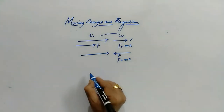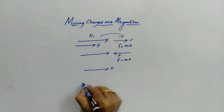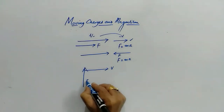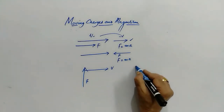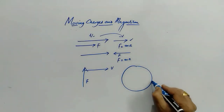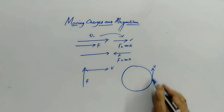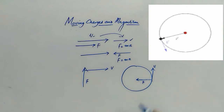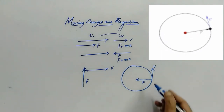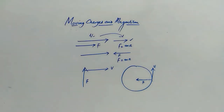Now what happens when the velocity is in one direction but the force is acting in the perpendicular direction? In this case, the velocity is in the tangential direction and the force acts perpendicular to it — this is the case of circular motion, where the force is perpendicular to velocity.